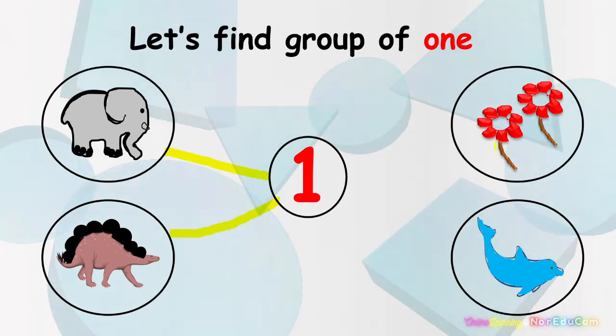What are these? Yes, these are flowers. Let's count how many flowers do we have here. 1. 2. 2 flowers. Is it group of 1? No, it's not. It's group of 2. So do not match it. Let's cross it out.